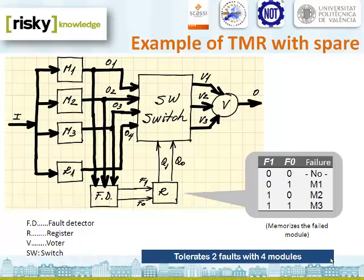The basic behavior of this system is as follows. The system remains in the basic TMR configuration until the disagreement vector determines a fault. The idea is to compare the output of the voter with the individual outputs of the modules. When an error is found, the module which disagrees is labeled as faulty and removed from the TMR core, and the spare is switched to replace it. In the slide, we can see three working modules called M1, M2, and M3.